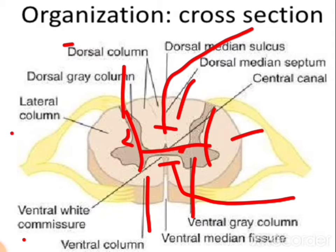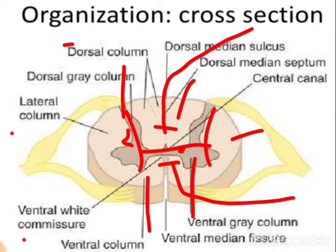Grey matter consists of a collection of nerve cell bodies and blood vessels, which give the area its grey colour. White matter consists of myelinated nerve cell fibres — since myelin sheath is white in colour, this area appears white. White matter is devoid of blood vessels. This is the key difference between grey and white matter.